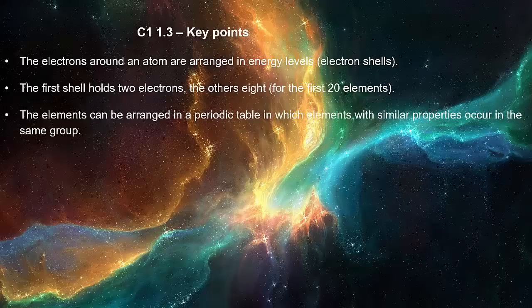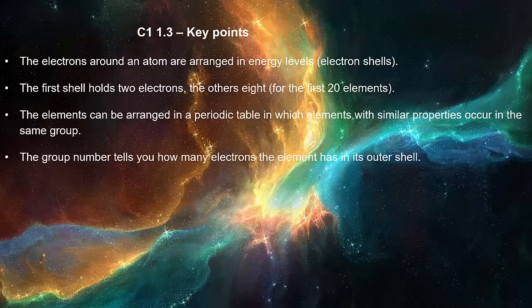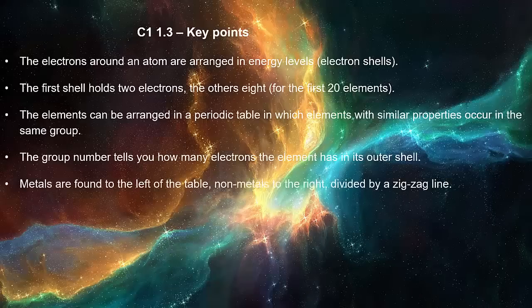The elements can be arranged in a periodic table, in which elements with similar properties occur in the same group. The group number tells you how many electrons the element has in its outer shell. Metals are found to the left of the table, non-metals to the right, divided by a zigzag line.